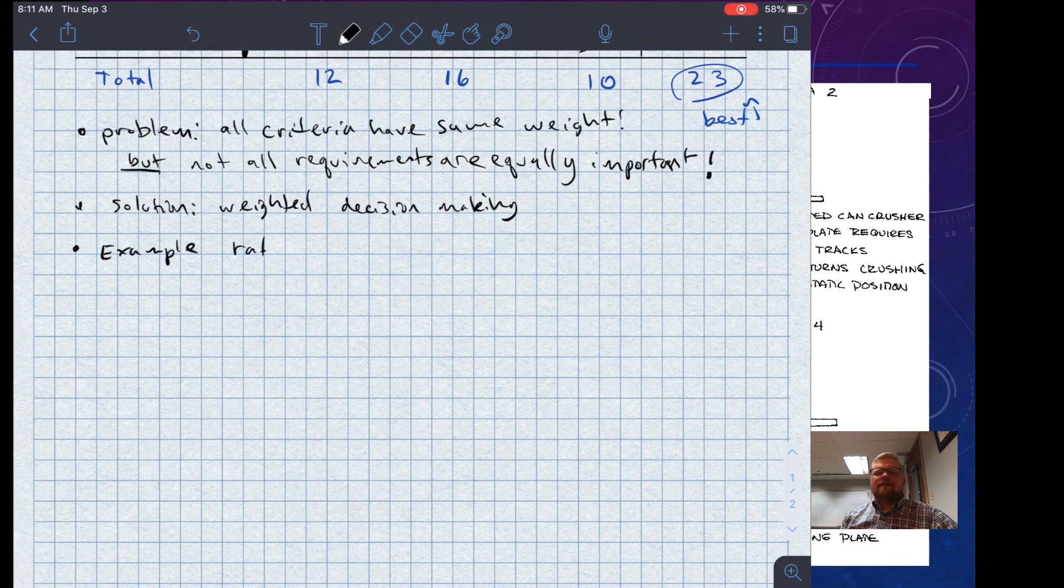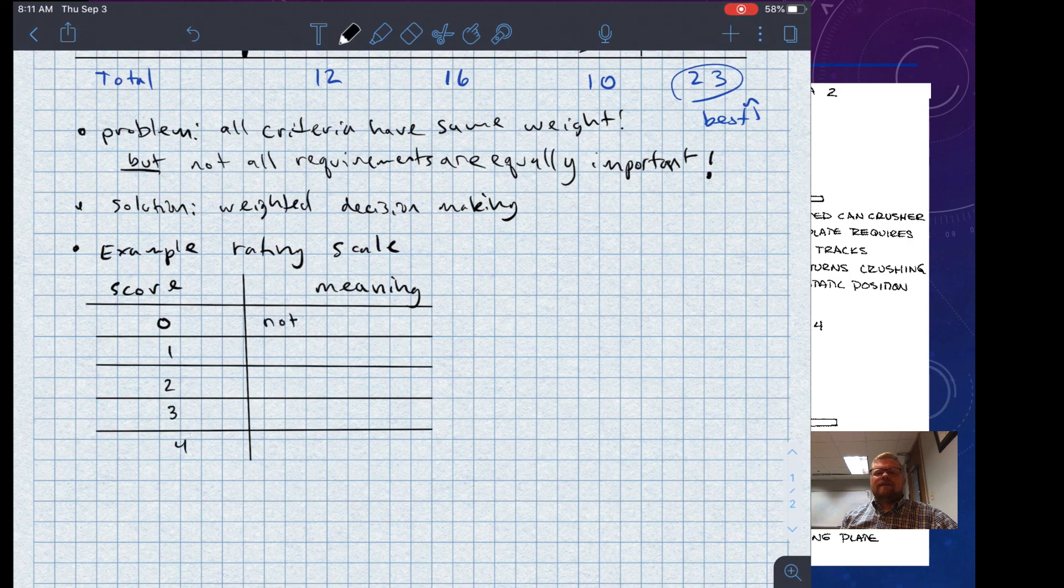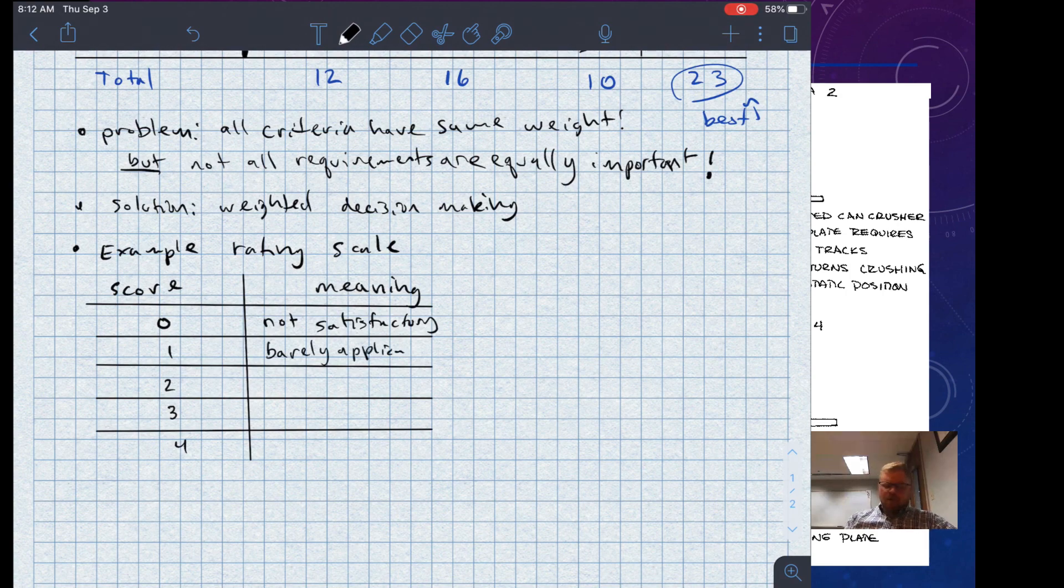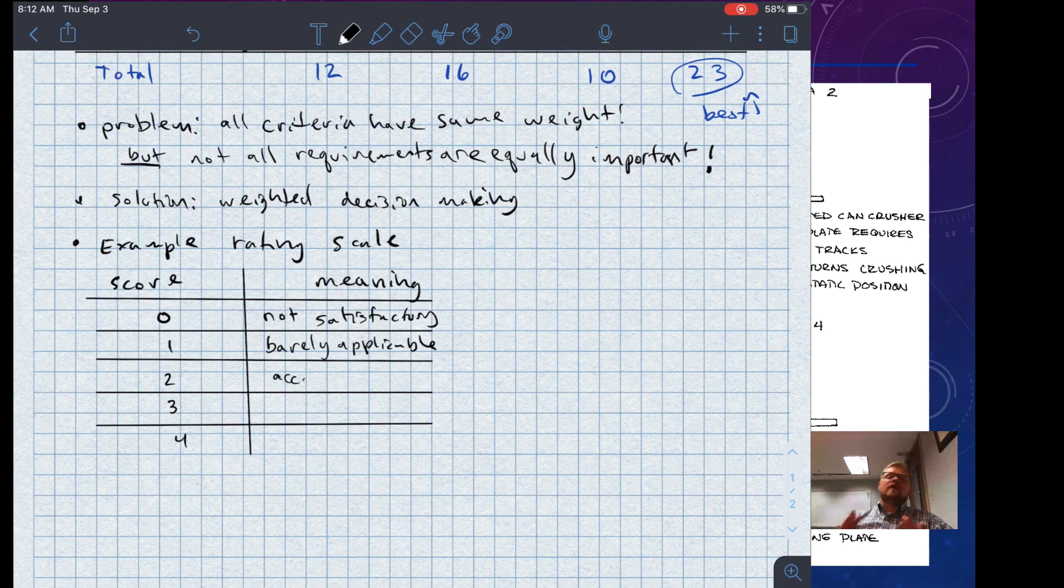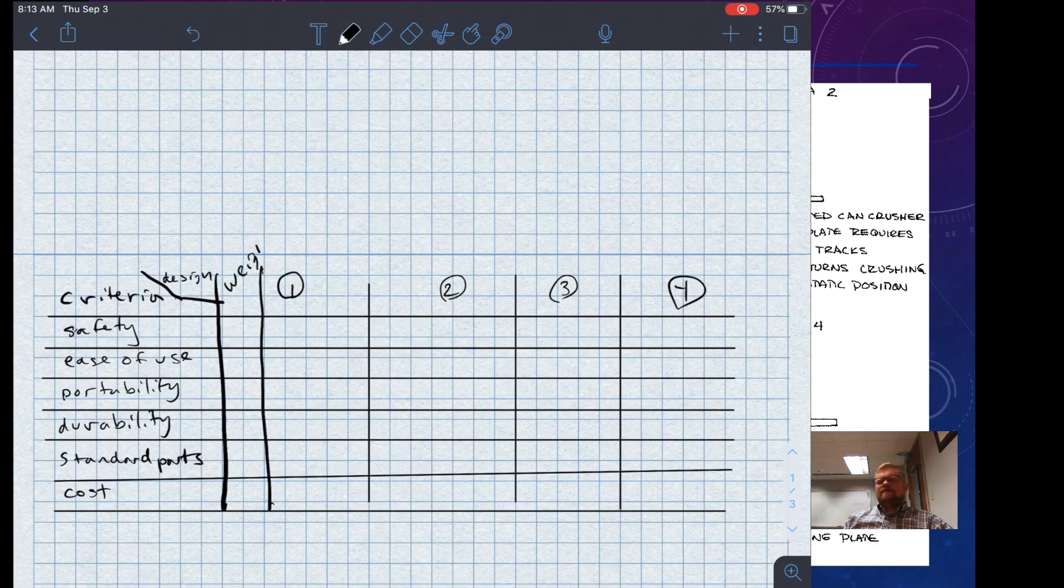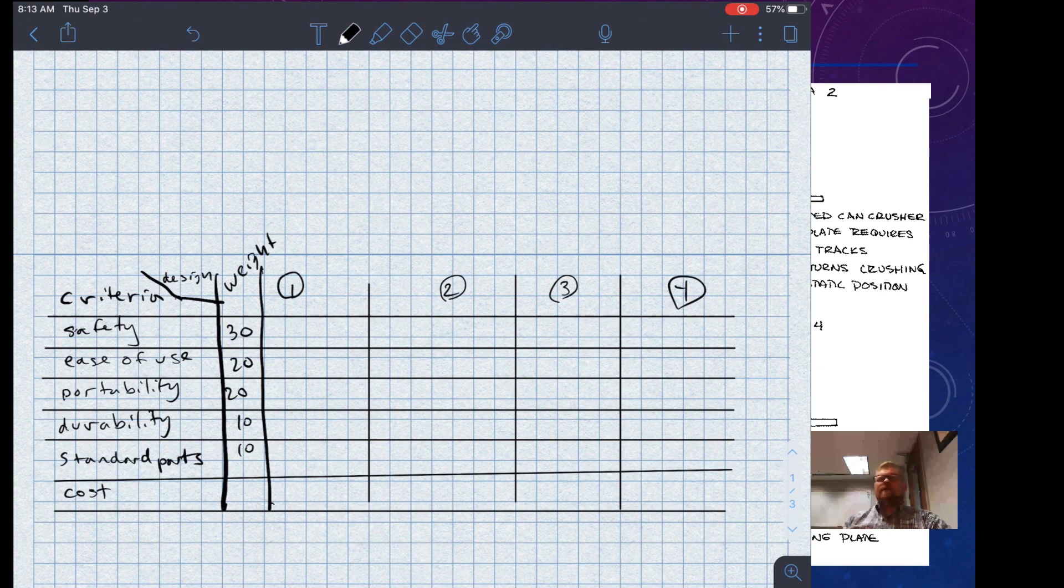We need to first rate our concepts. So what we'll do is we'll come up with a rating scale. Here's an example rating scale for you. I'll make this little table with a score and the meaning. So a score of zero equates to not satisfactory. A score of one, barely applicable. A score of two is acceptable. A score of three is good. And a score of four is very good or ideal. Then what I'll do is I'll go through and I'll make ratings based on that rating system. Rather than ranking things against each other, what I'm doing is I'm just looking at each design in particular and saying, this looks like it's pretty safe. In this case, design ideas four and two look pretty safe.